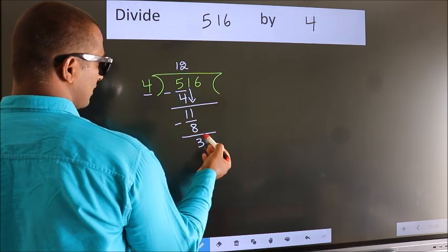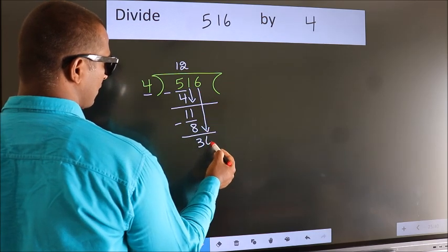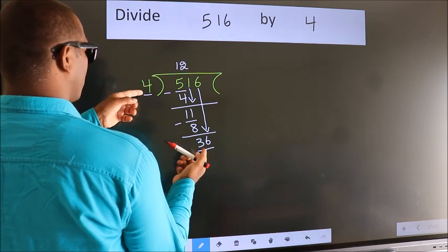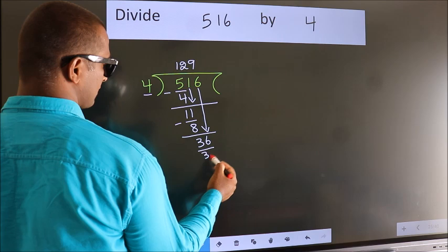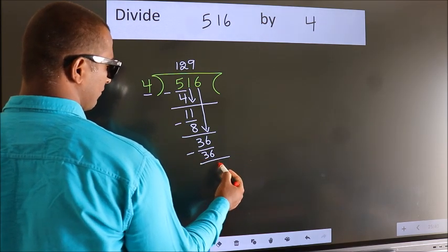After this, bring down the next number. So 6 down. So 36. When do we get 36 in the 4 table? 4 nines 36. Now we subtract. We get 0.